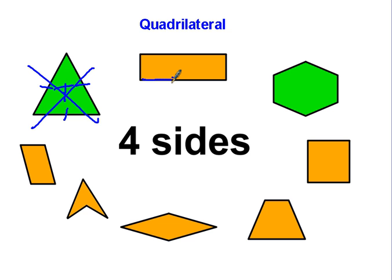This is a quadrilateral because it has one, two, three, four sides, and they have to be straight sides as well, so I'm going to put a Q on that for quadrilateral.